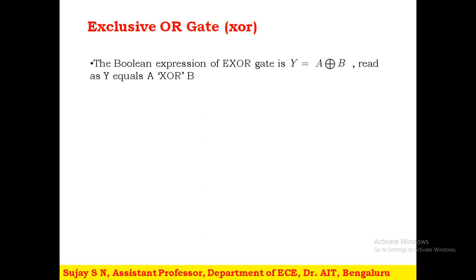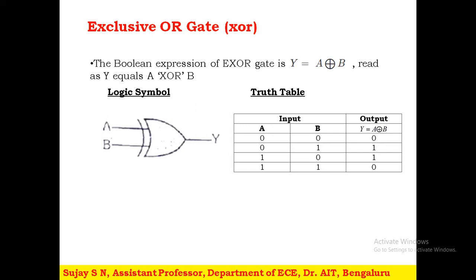Next is the XOR gate, named the Exclusive OR gate. The Boolean expression is Y = A ⊕ B, read as 'A XOR B.' The logical symbol is similar to the OR gate with an extra curved line at the input. Looking at the truth table, XOR gives output 1 only when the inputs are different: 0,1 or 1,0. For A=0 and B=0, output is 0; for A=1 and B=1, output is 0. It exclusively checks OR — at least one input must differ.